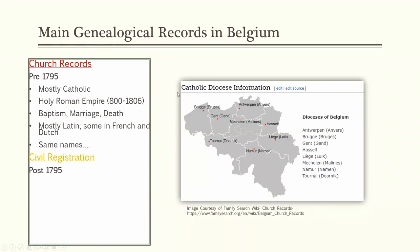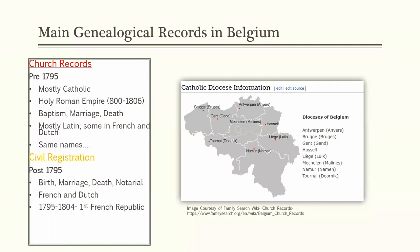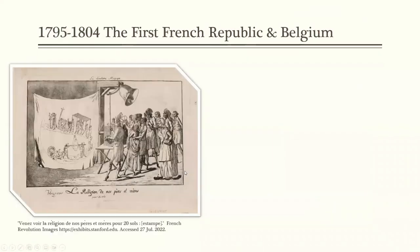Civil registrations are going to be the main source you'll use after 1795 — birth, marriage, and death records. Notarial acts have very good genealogical value but aren't all available yet; the State Archives of Belgium are actually working on digitizing those. These are in French and Dutch for the most part. The main periods of history that affect records are 1795 to 1804, the First French Republic, and then 1804 to 1815, the rise and fall of Napoleon, which really changed how records were kept throughout all of Europe.